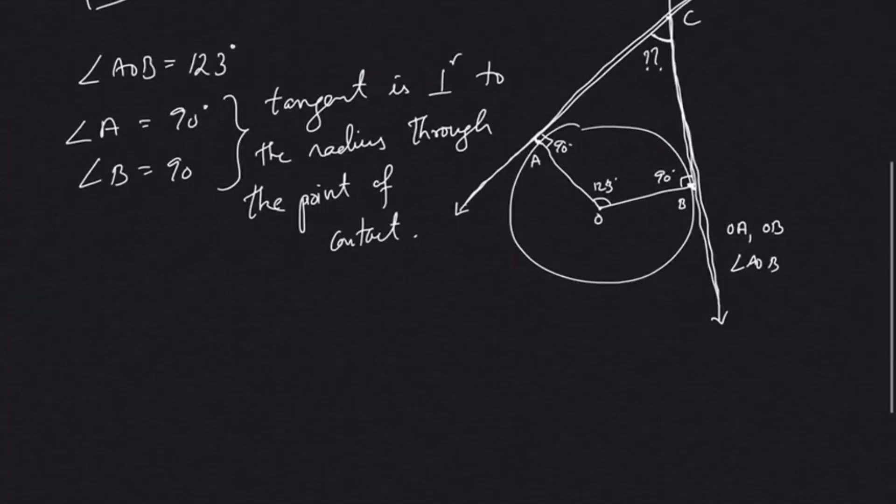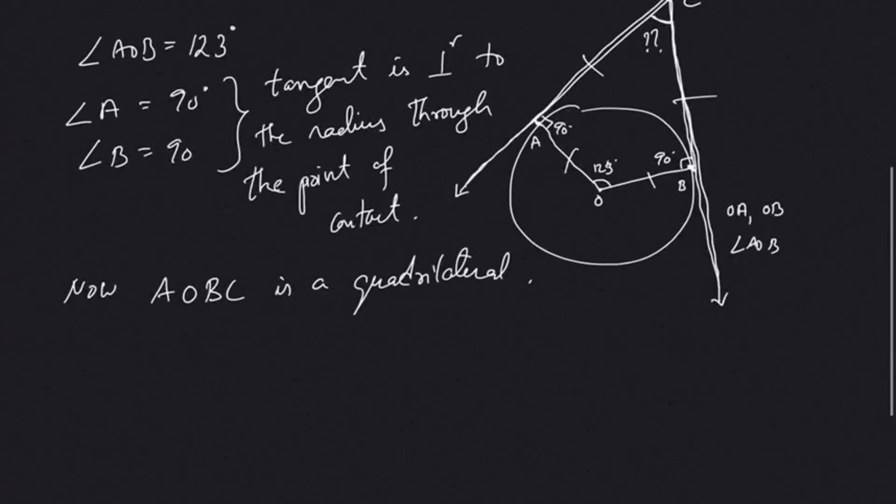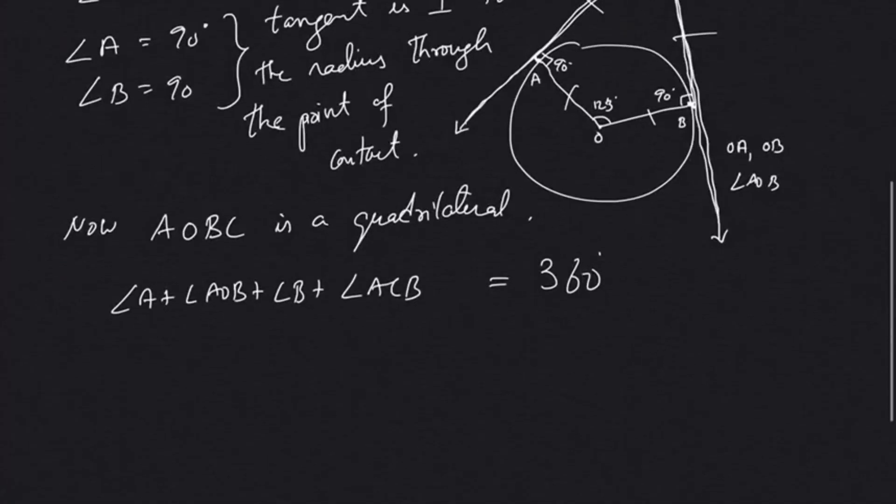I'll write: angle A will be 90 degrees, angle B is also 90 degrees. Tangent is perpendicular to the radius through the point of contact. Now AOBC forms a quadrilateral. We know that the sum of the angles in a quadrilateral is 360 degrees. So angle A plus angle AOB plus angle B plus angle ACB should be 360.